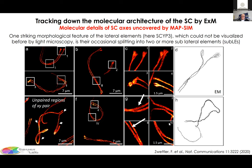Why can we visualize these structures? We think the reason is post-expansion labeling. After expansion, more epitopes are accessible. For the splitting of lateral elements into sublateral elements: if the splitting is only 10–15 nanometers, no antibody will bind in between in an unexpanded state. But upon expansion, antibodies can bind, and therefore you are able to resolve those sublateral filaments or the fraying of lateral filaments at the end.